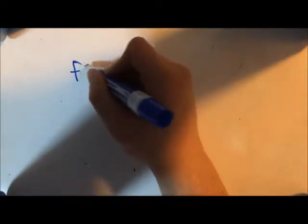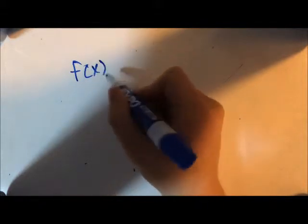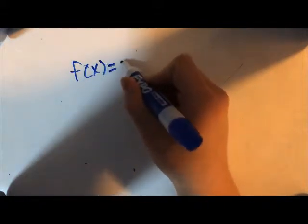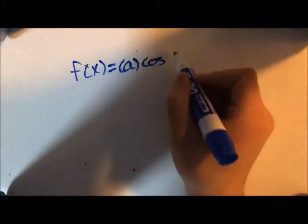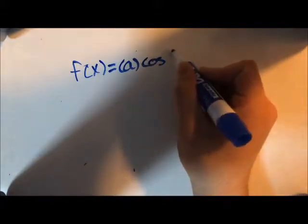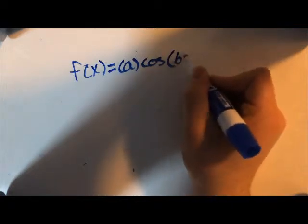A base cosine graph can be modeled by the equation f of x equals a times cos times b x minus h plus k. First off, let's identify the values of a, b, h, and k in this cosine function.